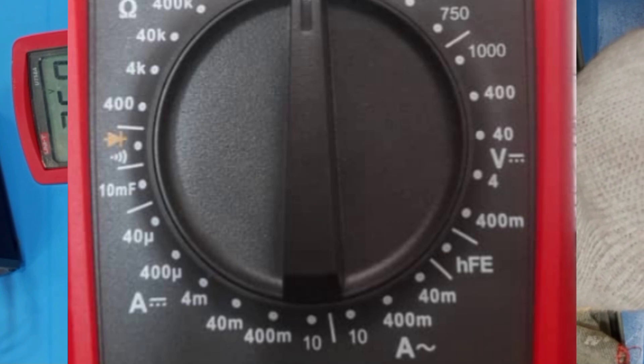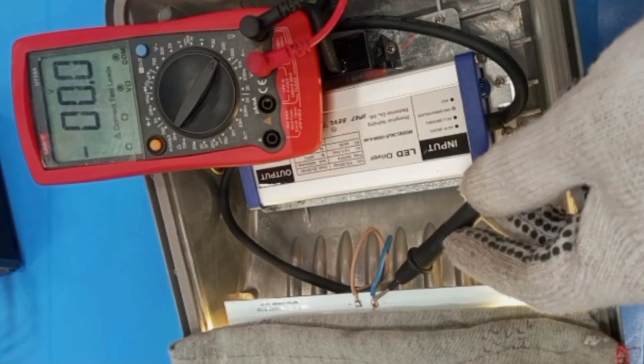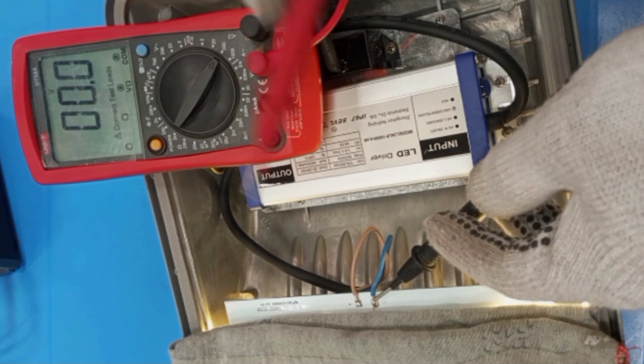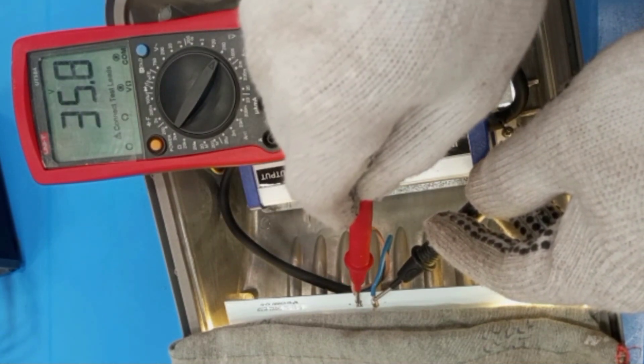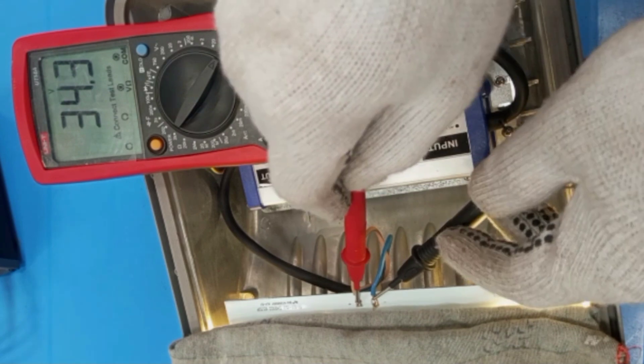First of all, we'll take a measurement of the voltage that goes to the lamp, and then we'll also take the current that is taken by the lamp, after which we can find the power. Let's get started.